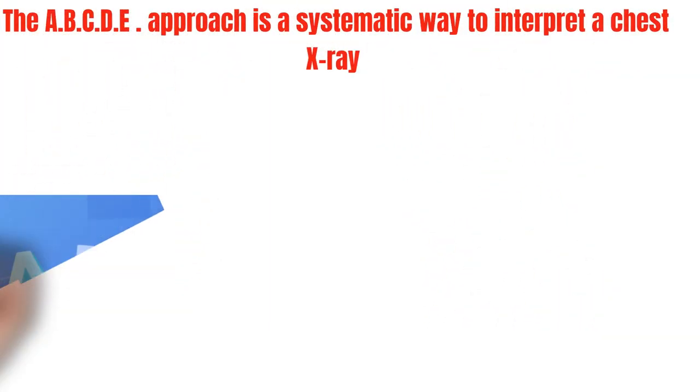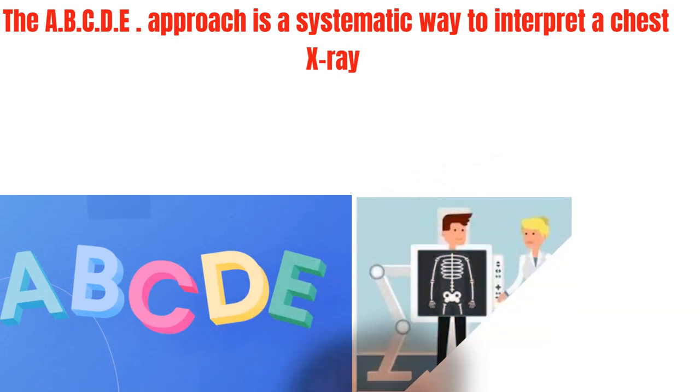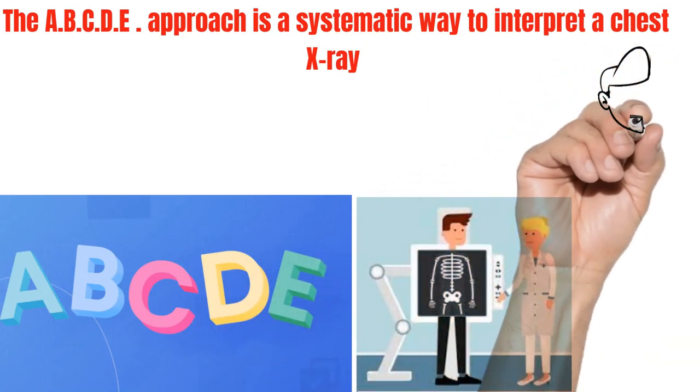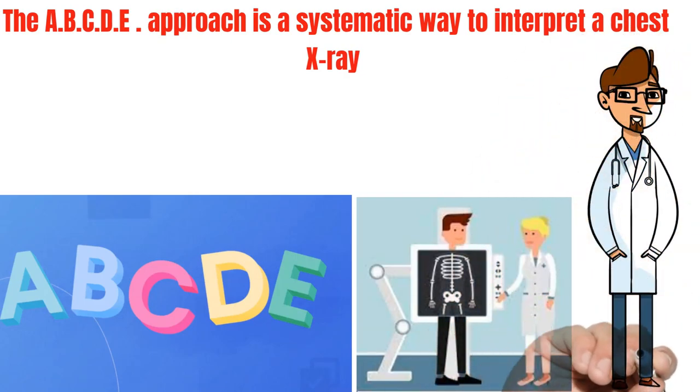A, B, C, D, E approach is a systematic way to interpret a chest x-ray and identify any abnormalities or potential issues. Here is what each letter stands for.